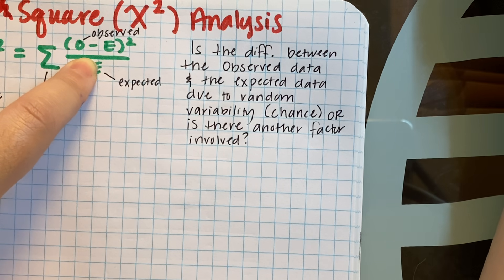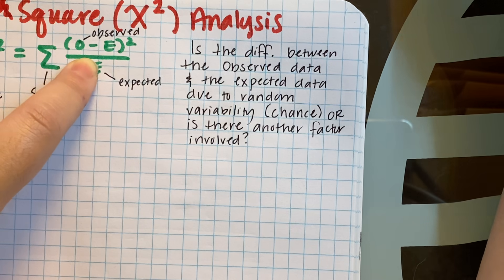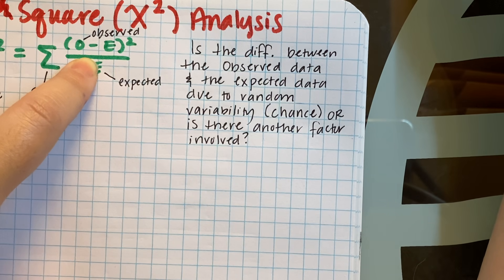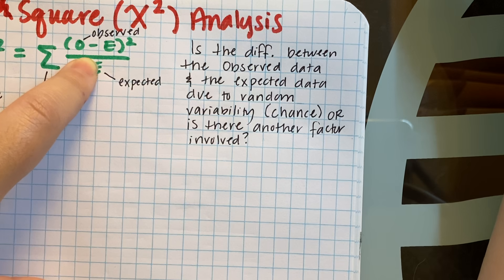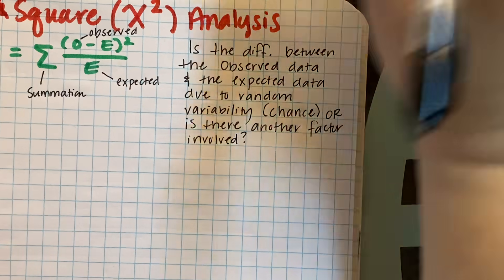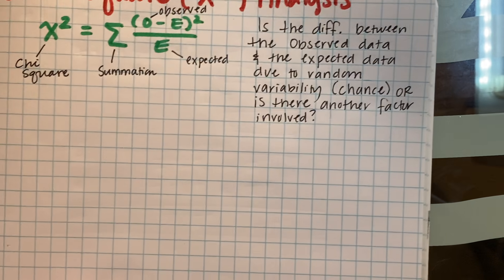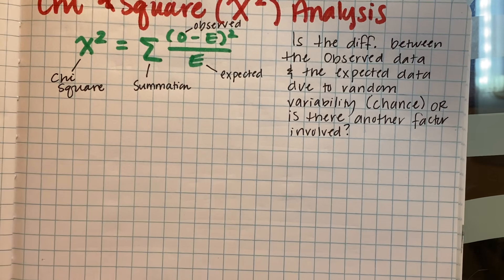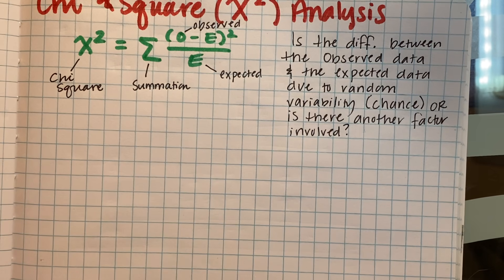When we do this with genetics problems, we're trying to figure out: when I do a Punnett square, I would expect a certain ratio of genotypes or phenotypes for my offspring — but is the difference between what I expect and what I actually see due to random variance, or is there some other inheritance pattern involved, like codominance, incomplete dominance, or linked genes? It helps us confirm the genotypes of parents and determine if the data collected is reliable.